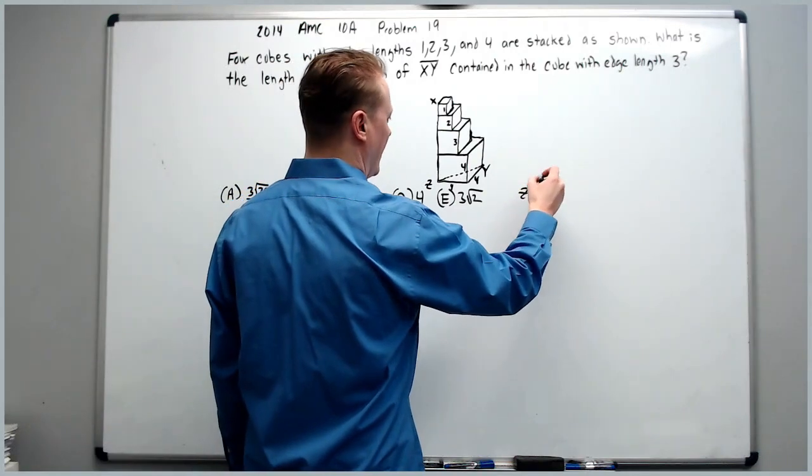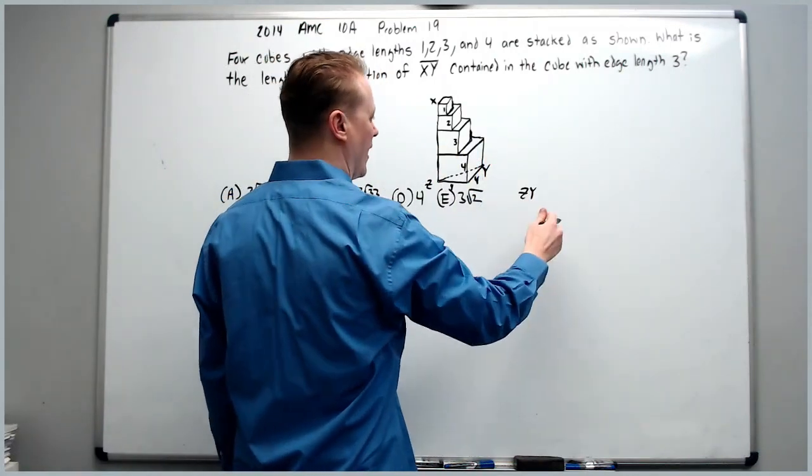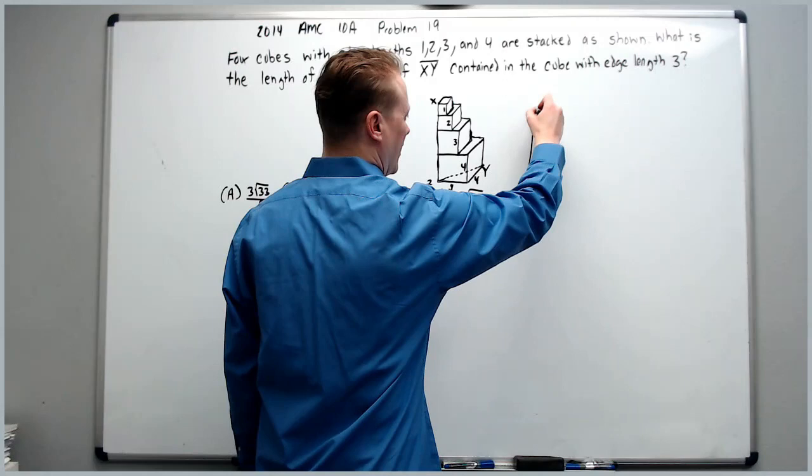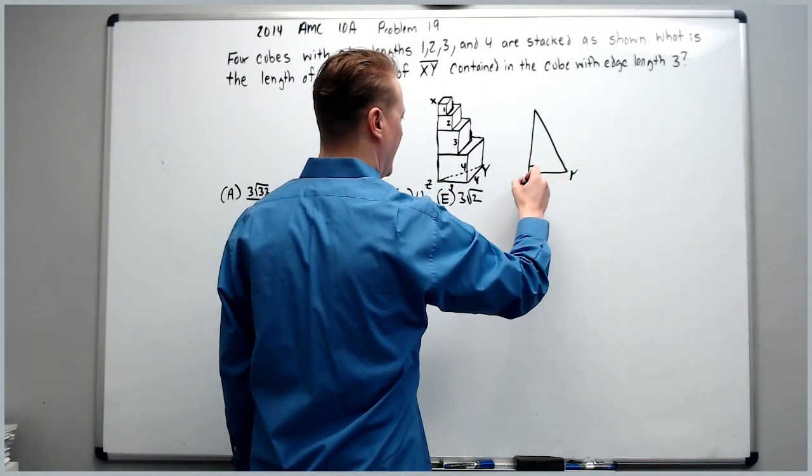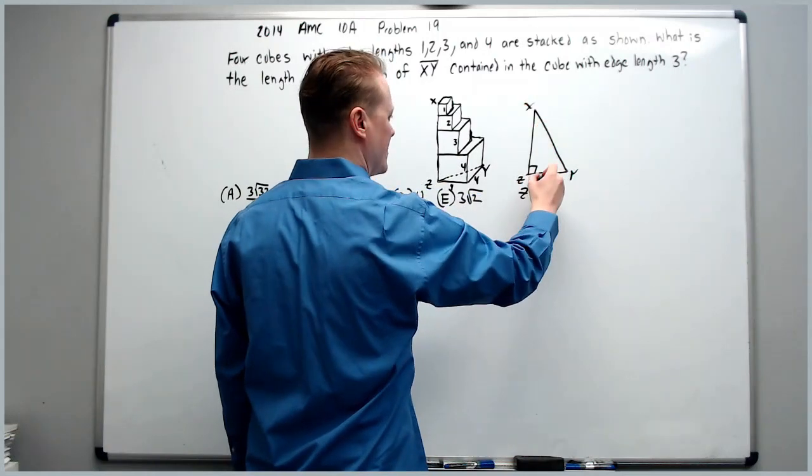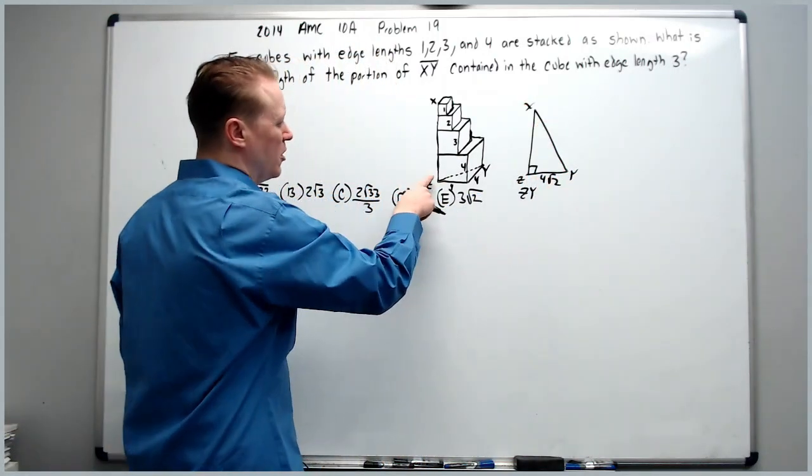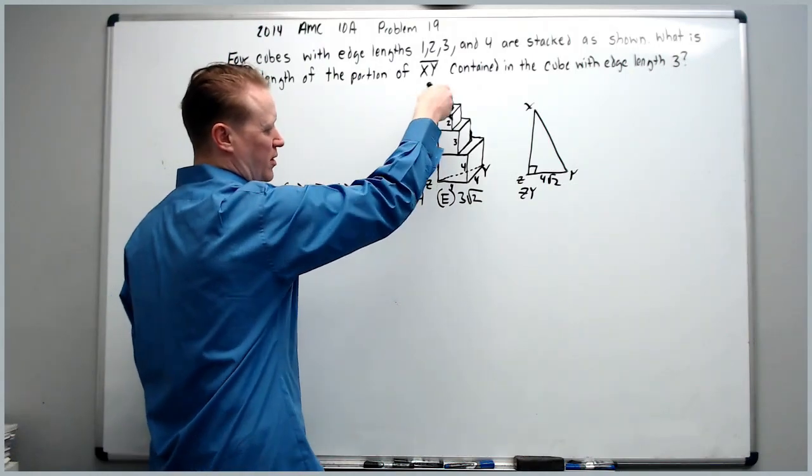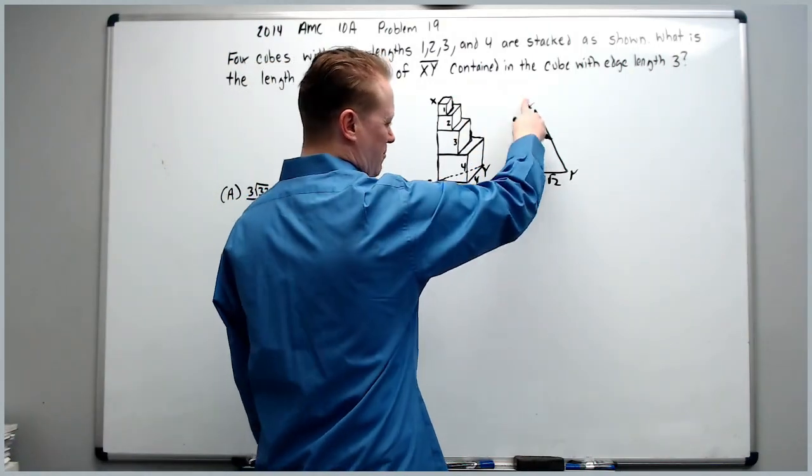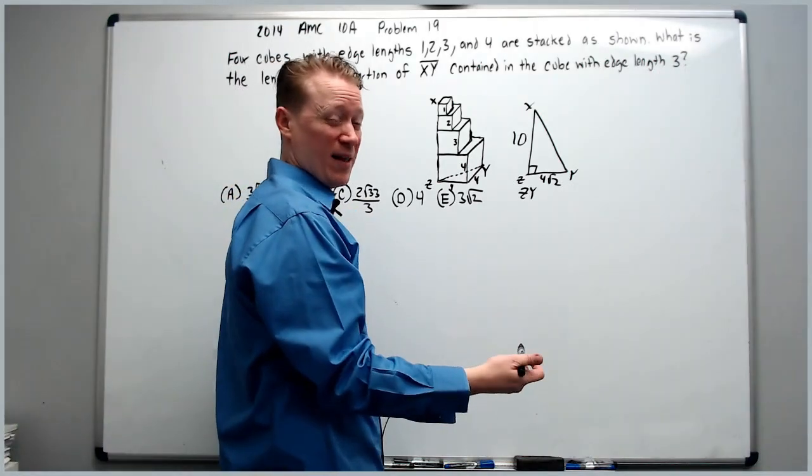So ZY and X to Z will make a right triangle now where this is Y, Z, X and this is 4 radical 2. What about XZ going here? It's 4 plus 3 plus 2 plus 1 which is 10, and we can now find this length with Pythagorean theorem.